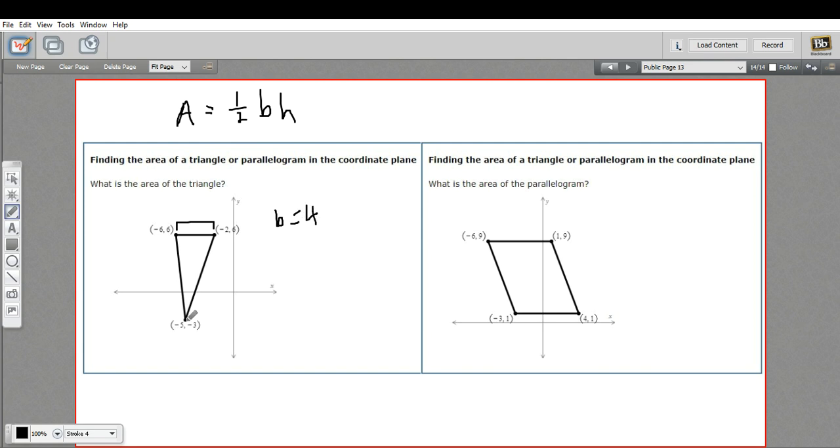Well, the height of a triangle, you start from the vertex opposite the base, and you drop a perpendicular line. And we don't have a measurement for that, but the length of this line is the difference between the y-coordinates on the base and the y-coordinate here at the vertex. So our y-coordinate here is negative 3. Our y-coordinate here is positive 6. So that's a distance of 9. So our height equals 9.